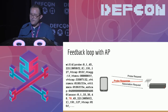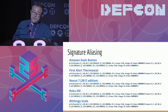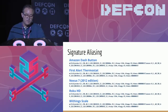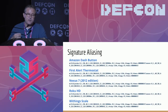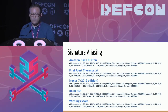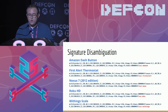Sometimes we see the same signature from multiple devices. These examples are all devices using the Broadcom 43362 chipset, running Linux, using the same driver, same WPA supplicant, and all old enough that they don't have a transmit power information element — so the signatures are identical. They are an Amazon Dash button, a First Alert thermostat, a Nexus 7 from 2012, a Roku HD, and a WeThing scale.